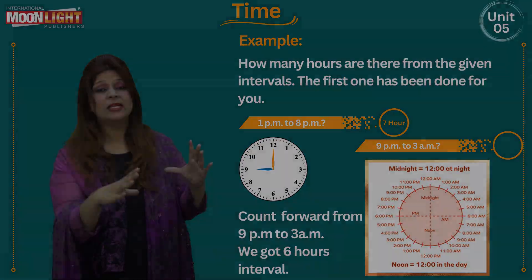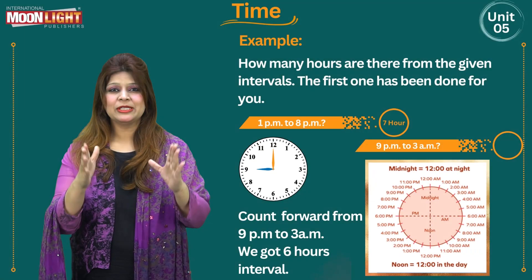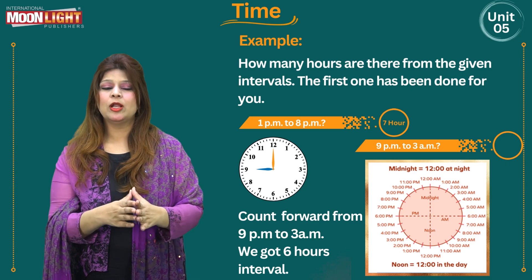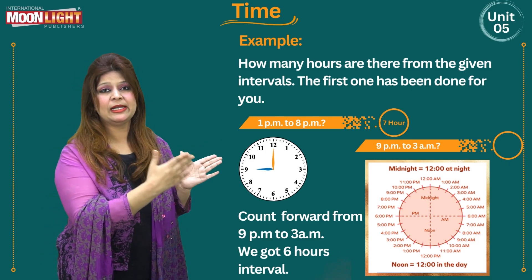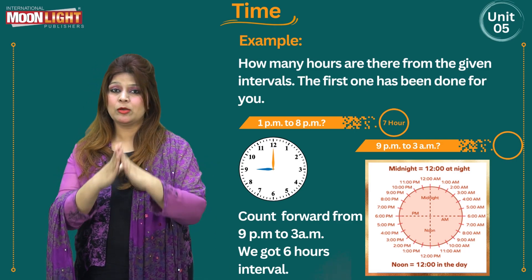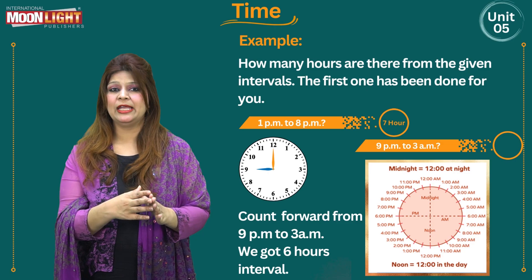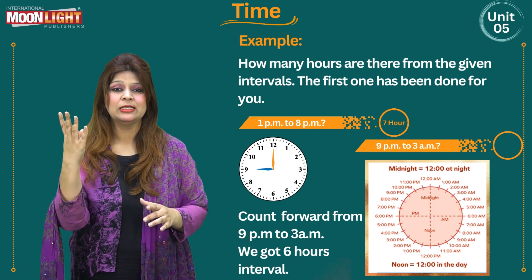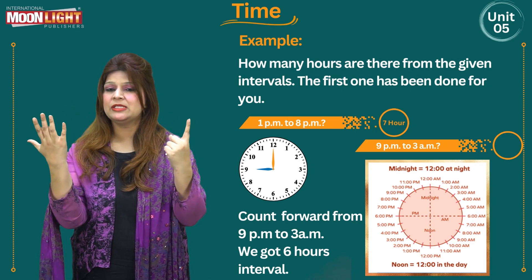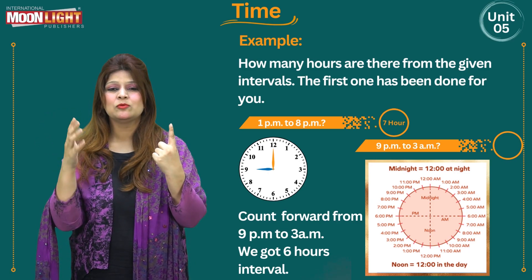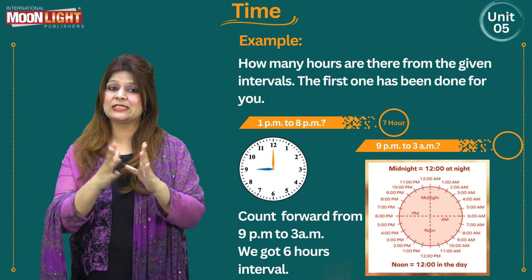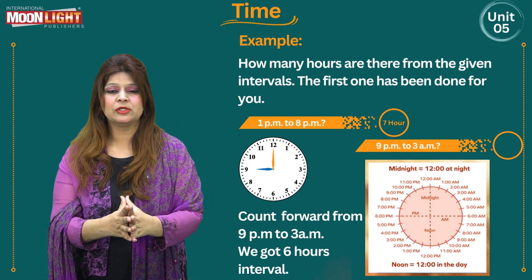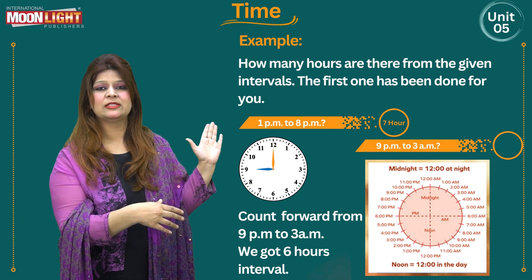For more detail, you can visit the lecture I delivered for Class 2 on time. Now count forward from 9: after 9 we have 10, 11, 12, then 1, 2, and finally 3. Count how many steps: 1, 2, 3, 4, 5, 6 — so counting from 9 PM to 3 AM gives a 6-hour interval. We write 6 in the circle.